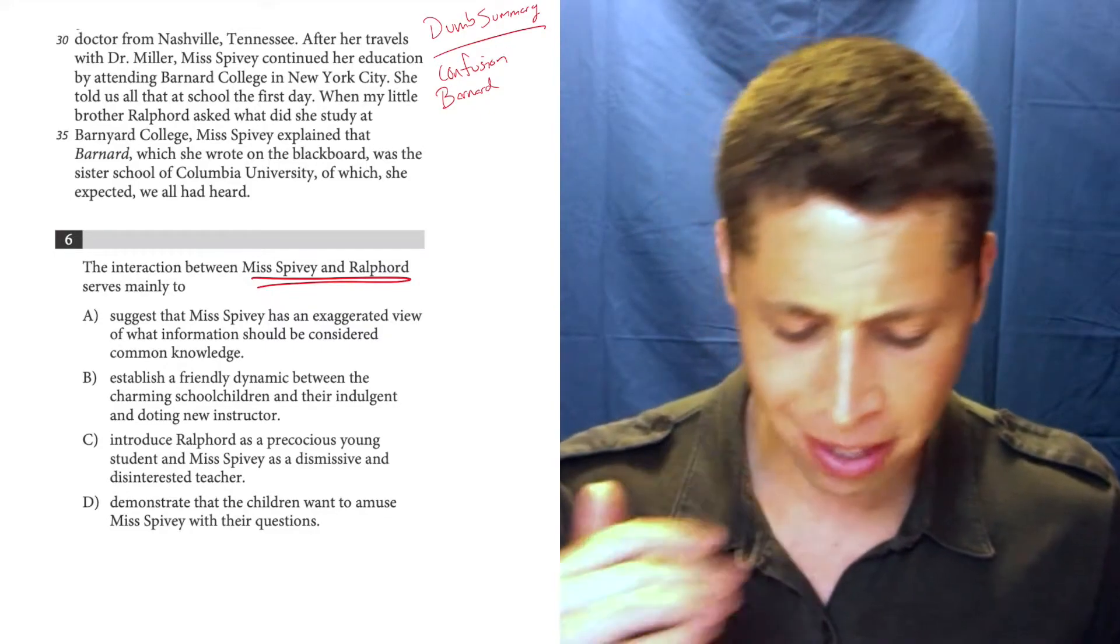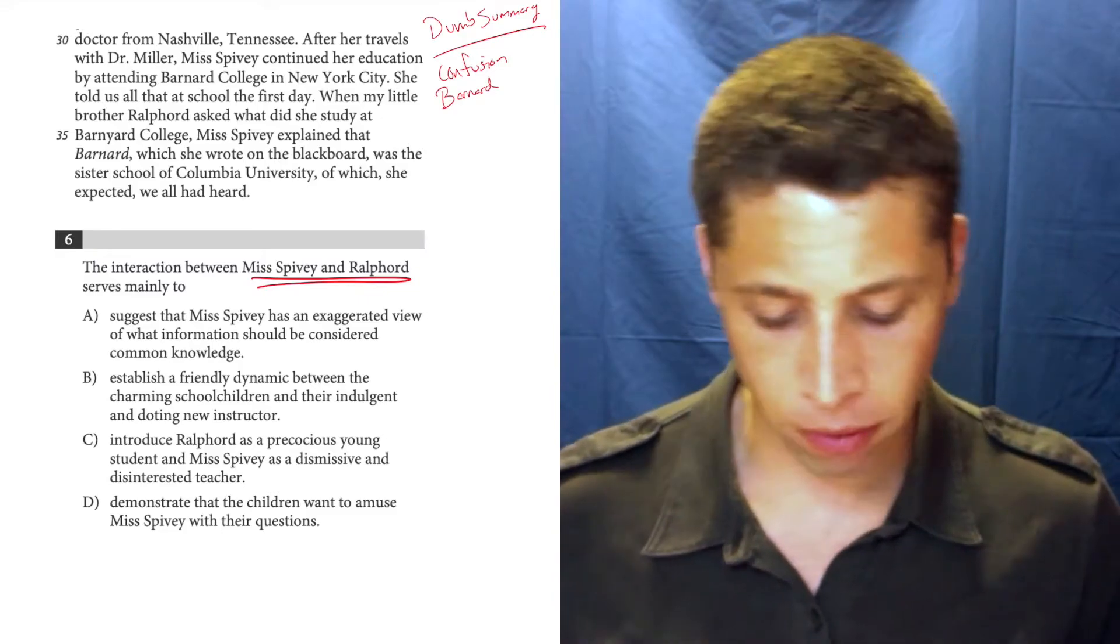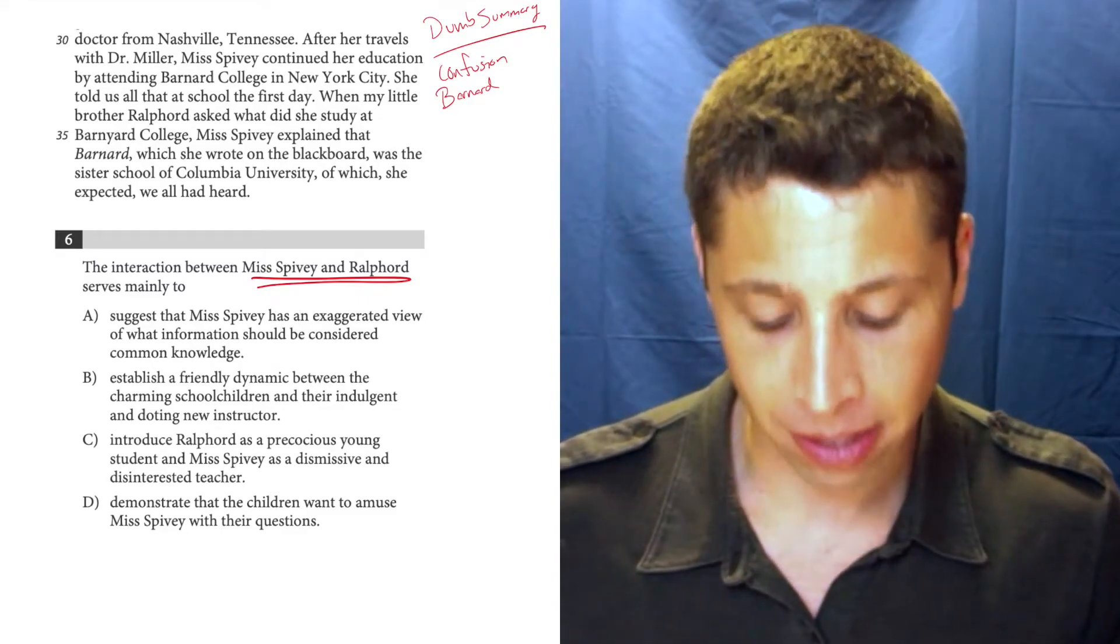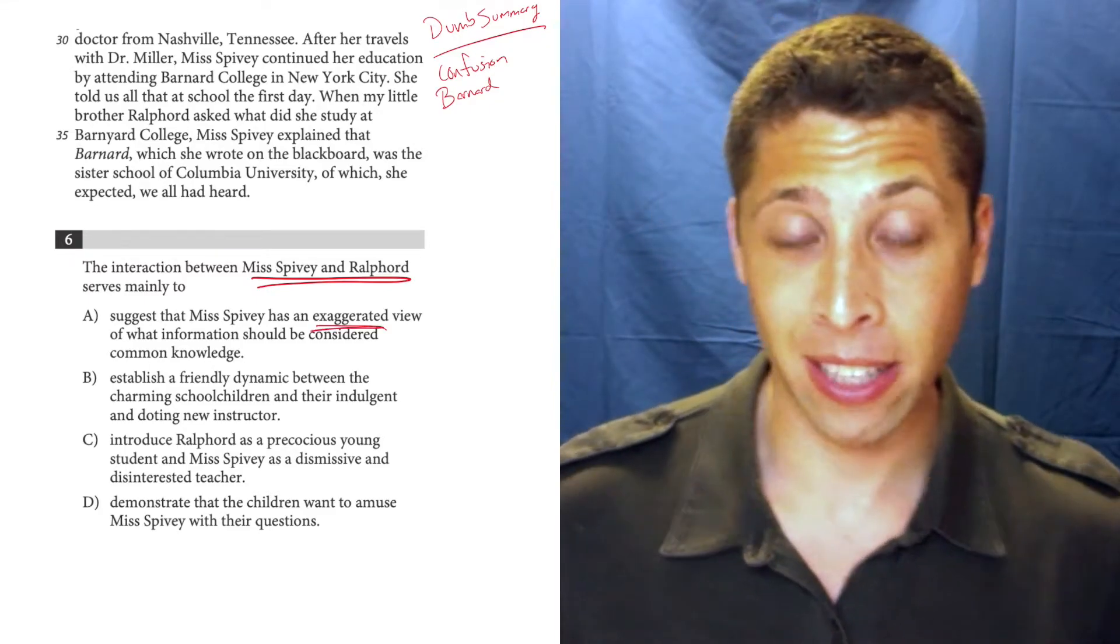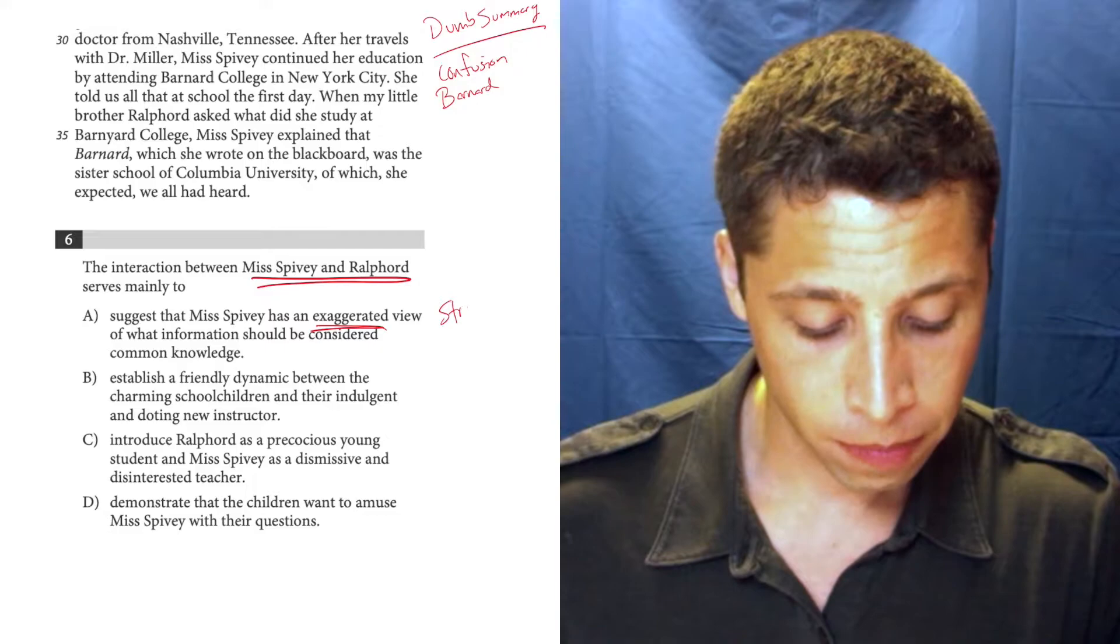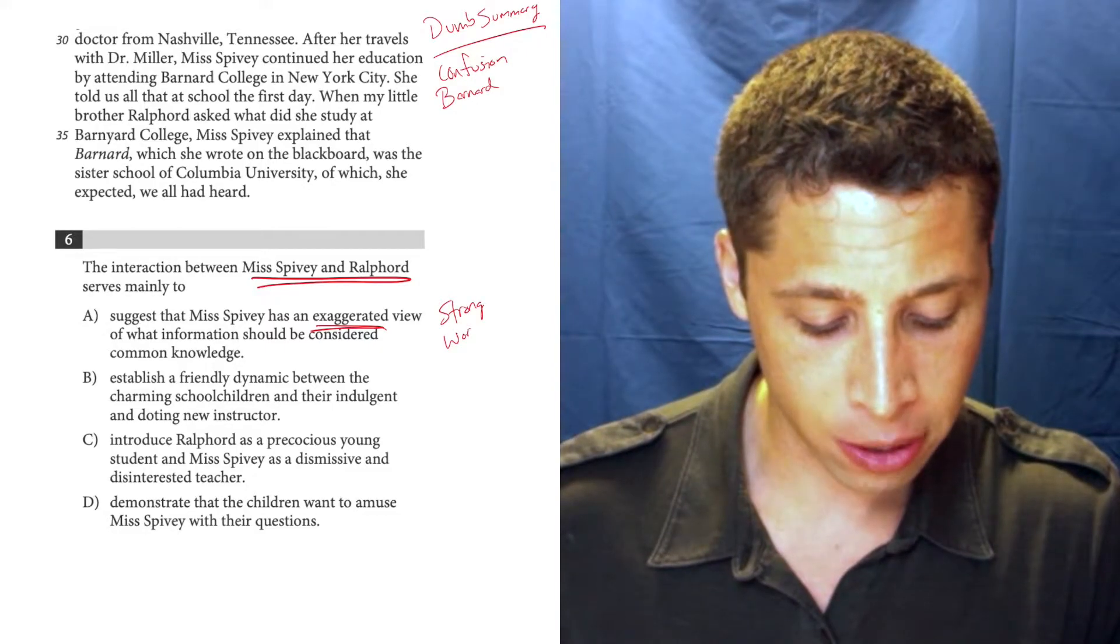So choice A suggests that Ms. Spivey has an exaggerated view of what information should be considered common knowledge. I don't like this choice because of the word exaggerated. That's a strong word. And so right off the bat, that scares me.